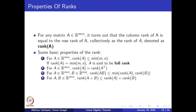For any m cross n matrix of real numbers, the column rank equals the row rank, and we refer to this quantity as the rank of the matrix. Nullity is the rank of the null space of A. Some interesting properties of rank: the rank of a matrix is at most the minimum of its two dimensions; the rank of a matrix equals the rank of its transpose; the rank of a product AB is at most the minimum of the ranks of A and B; and the rank of a sum A + B is at most the sum of the ranks of A and B.